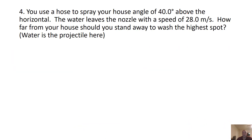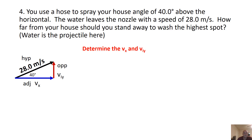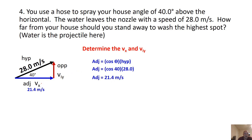Next: you're using a hose to spray your house at 40 degrees above the horizontal, and the water leaves the nozzle at 28 meters per second. The water acts like a projectile. We want to find how far from the house you should stand to wash the highest spot. We draw the triangle: VX is the adjacent, so cosine of 40 times 28 gives us 21.4. For VIY, sine of 40 times 28 gives 18 meters per second.